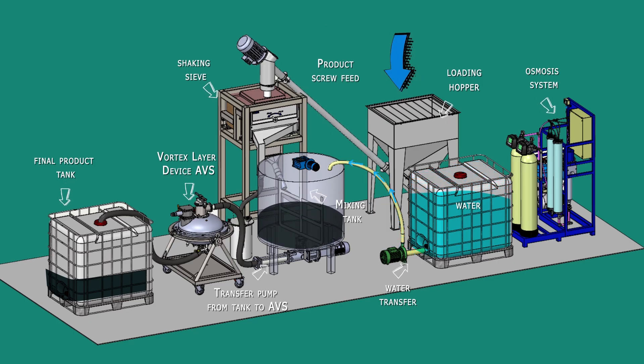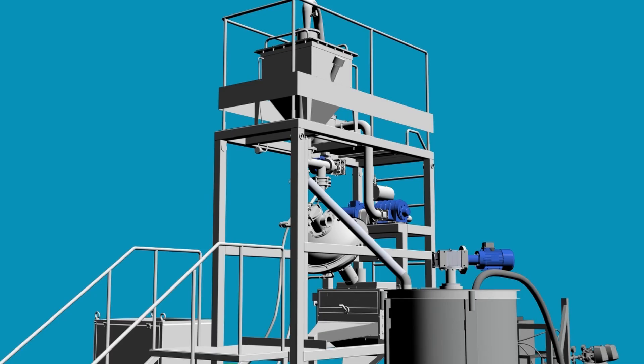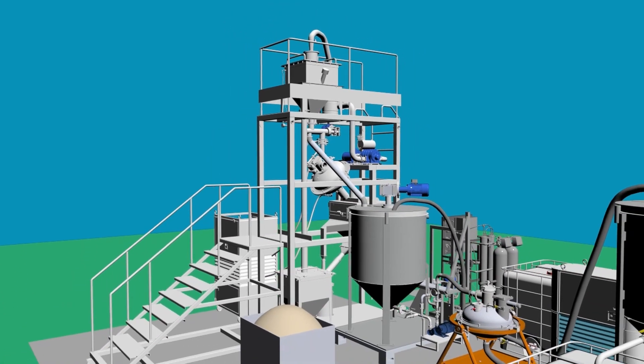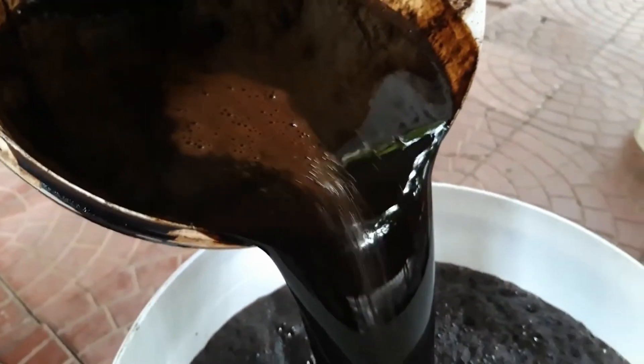Input raw materials—peat, sapropel, lignite, or leonardite—for humic fertilizers production must be pre-prepared and then fed into the working chamber of the vortex layer device, where humic substances are released in a matter of seconds. Then the prepared fertilizer enters a container for storage or for further packaging in containers of smaller volume.